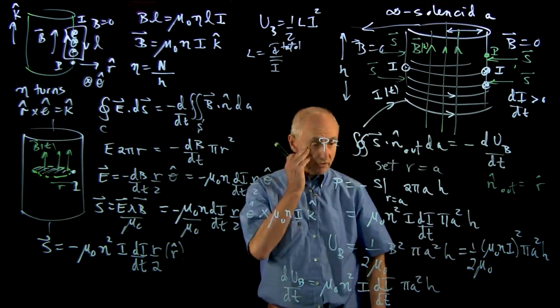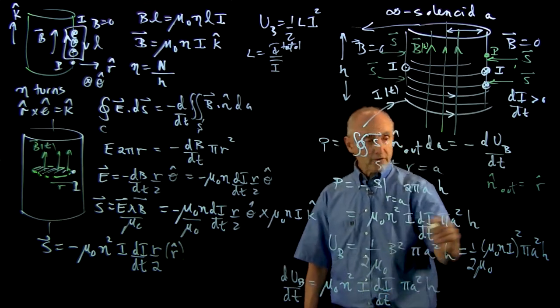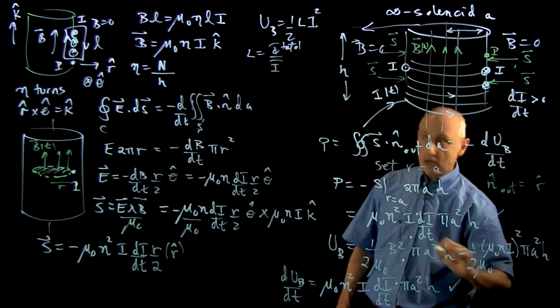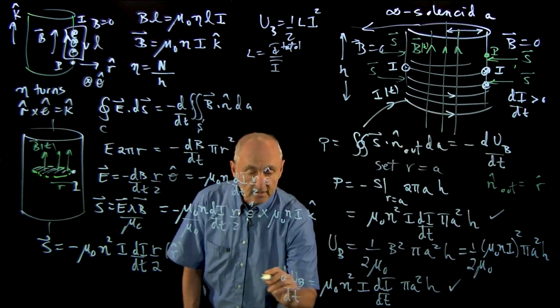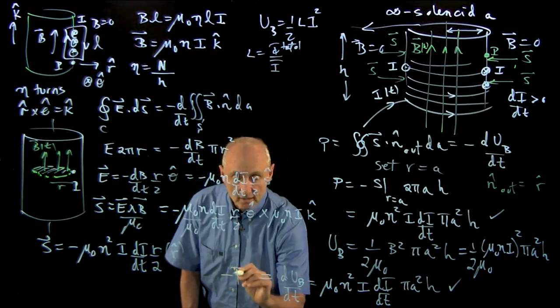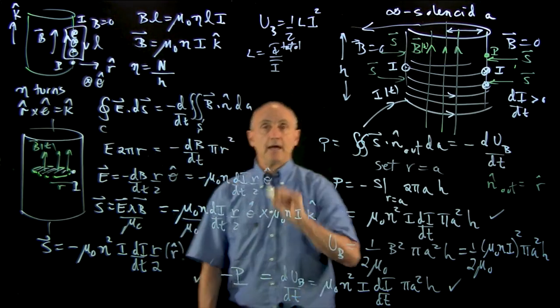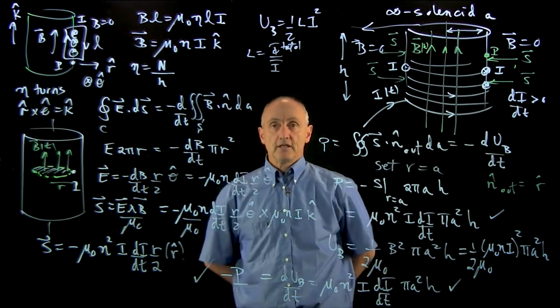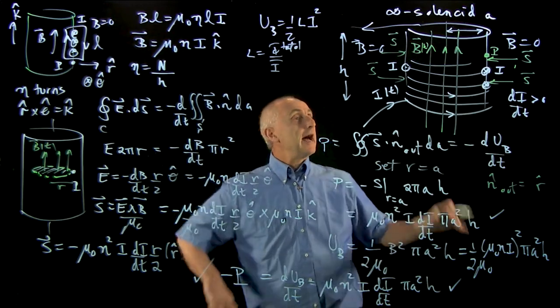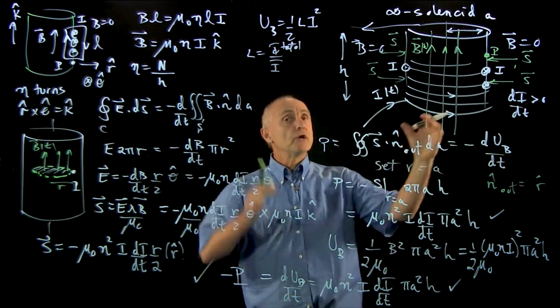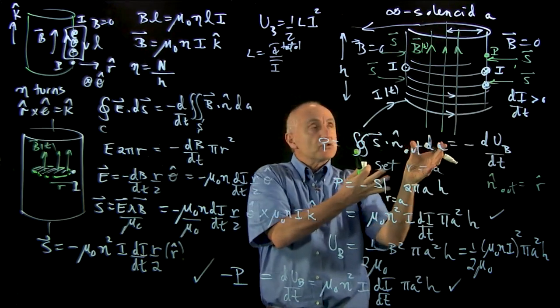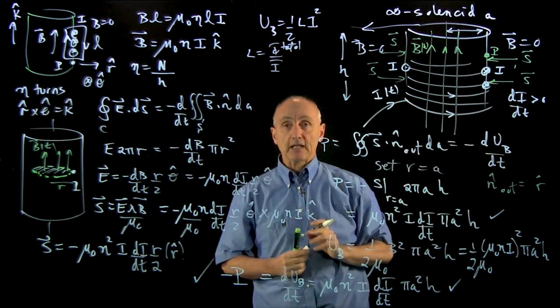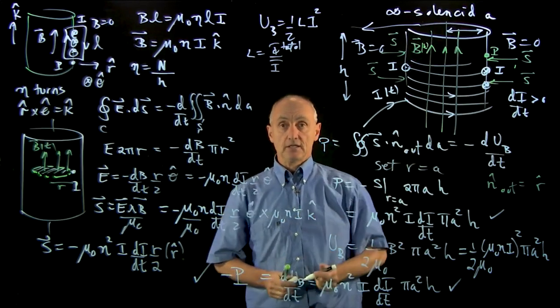When we compare that to our calculation of power flow, once again, we see that this is equal to minus P. That checks off the energy conservation. As we increase the current in the solenoid, energy flows into the solenoid, and that energy is stored in the magnetic field, which is increasing in time.